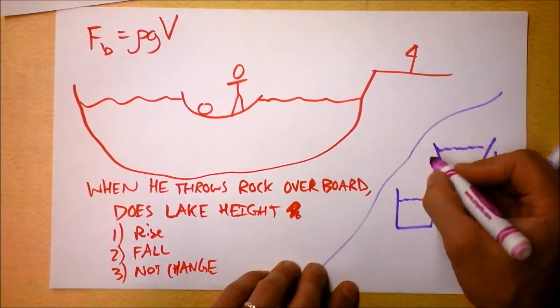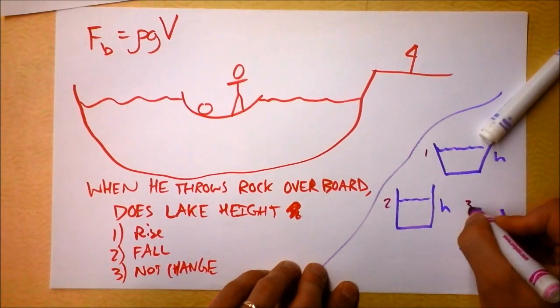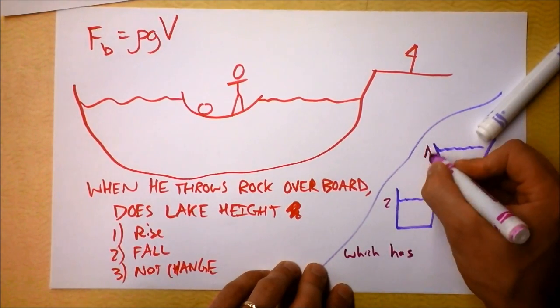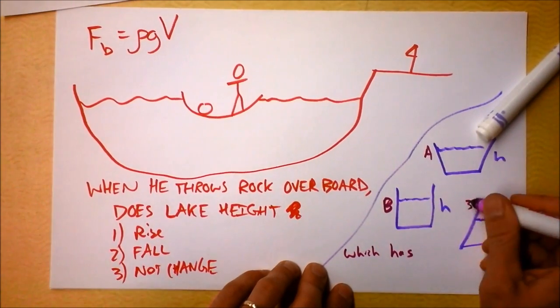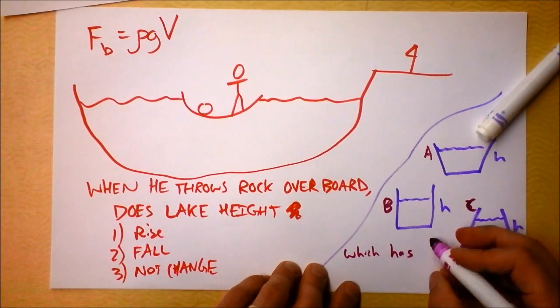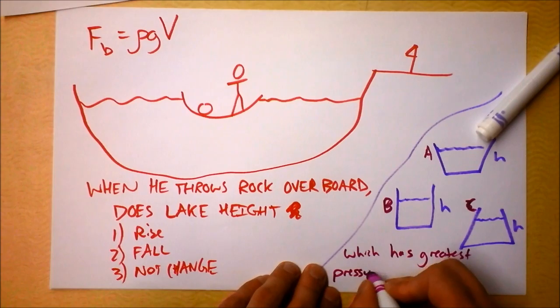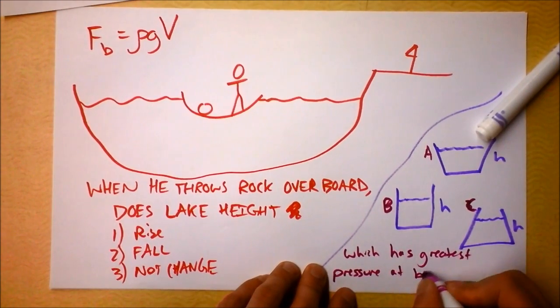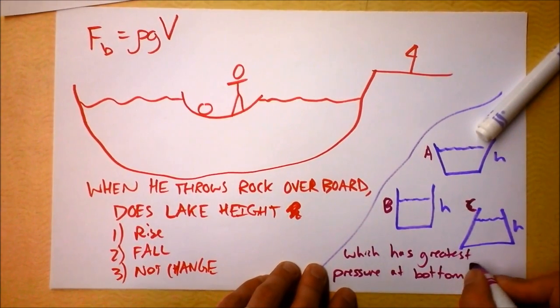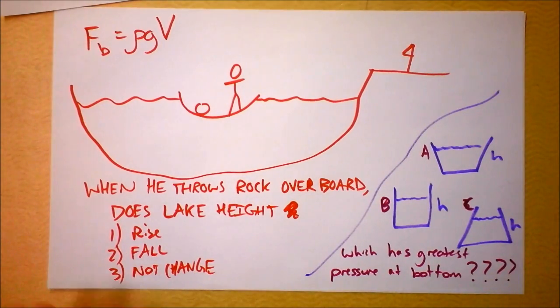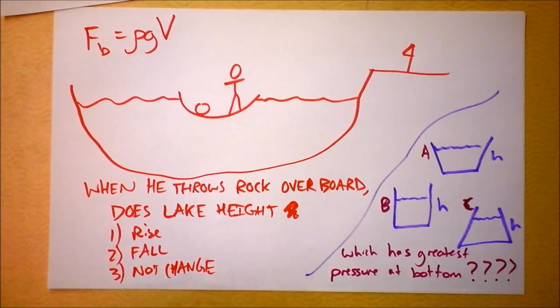And the question is, let's see, I'll call this one, two, and three. Which has... No, I'll call it A, B, and C so you don't confuse it with the other problem. A, B, and C. Which has greatest pressure at the bottom? There's a corollary question that goes with this, but I think it's a very important place to start. Please consider those two problems and solve them.